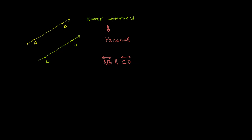Now, with that out of the way, what I want to do is draw a line that intersects both of these parallel lines. So here's a line that intersects both of them — let me draw that line right over there and I'll just call that line L. This line that intersects both of these parallel lines, we call that a transversal. It is transversing both of these parallel lines.